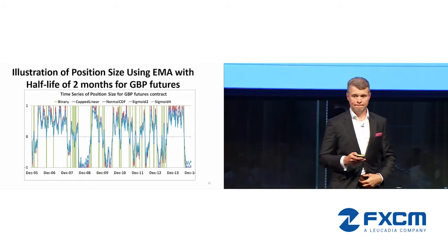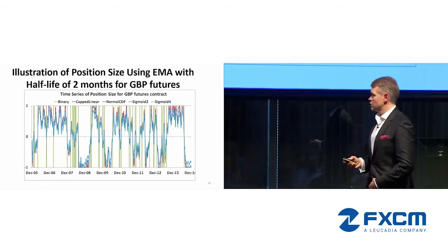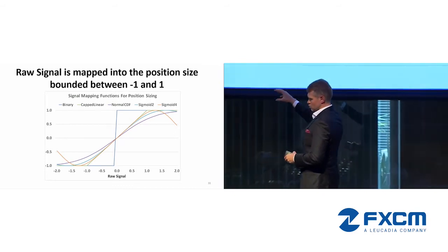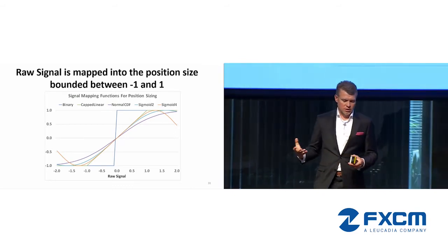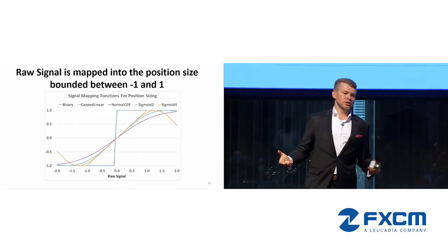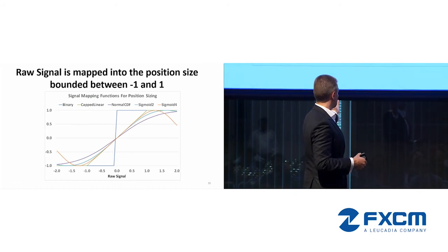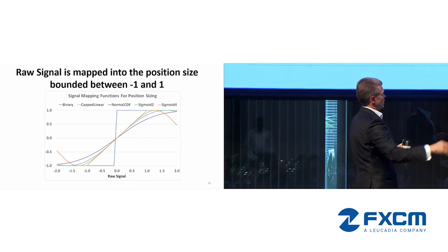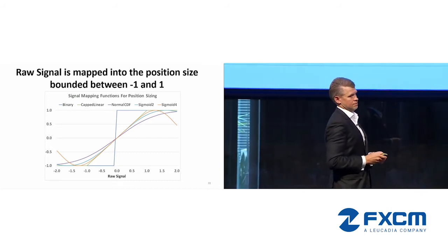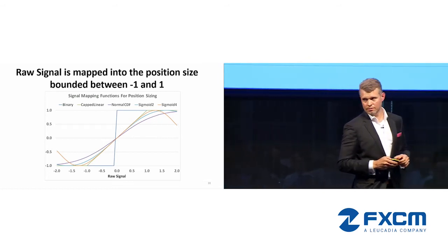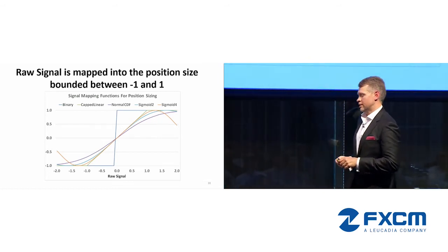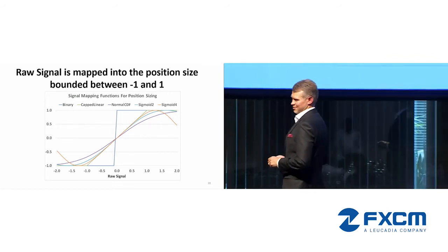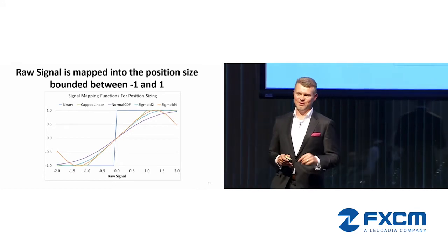The reasoning behind using sigmoid is to avoid over-trading when the signal becomes very extreme. If the signal is minus ten, you might question whether it is an outlier. The sigmoid adjusts extreme values of the signal. The question of which mapping leads to better final performance — and it's not just about performance but about the risk profile — will be illustrated in a few slides.